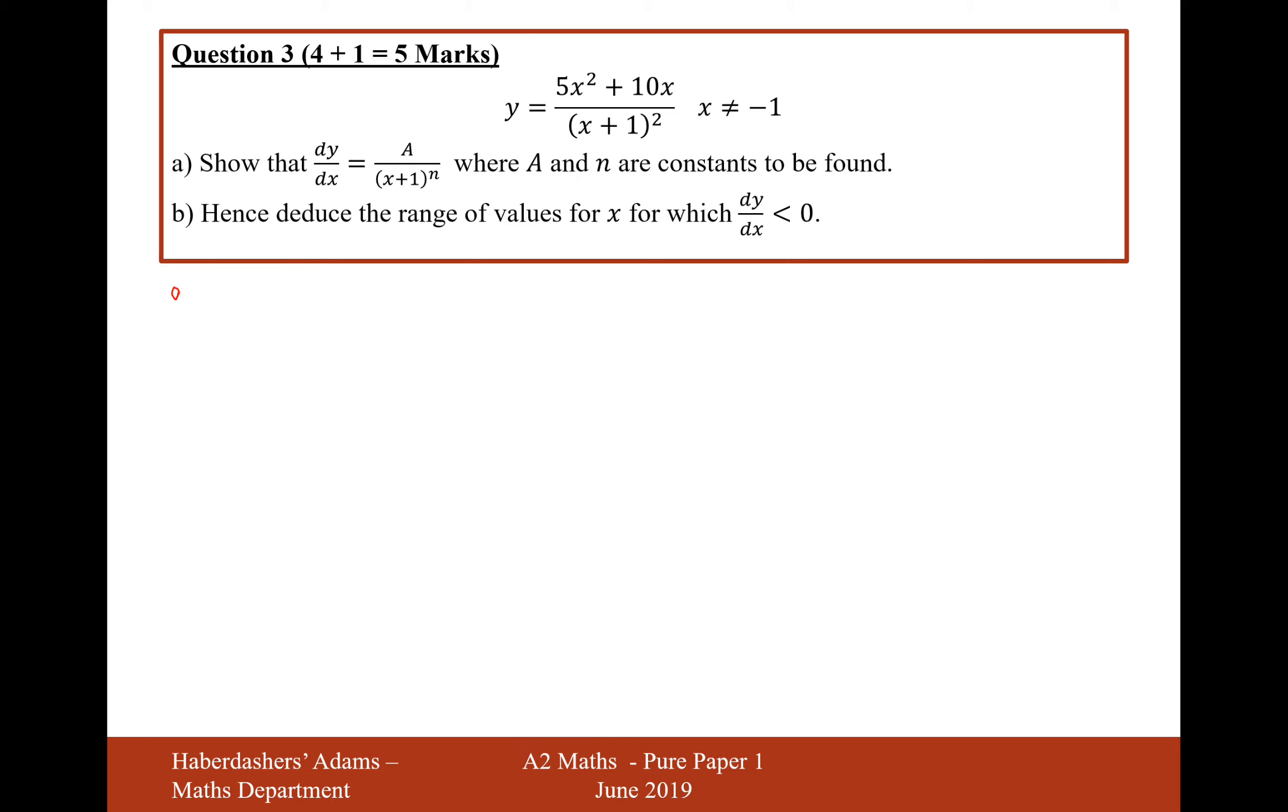Now in this question here we're going to be using the quotient rule. This says that if you're differentiating y equals u over v, then the differential dy by dx is going to be u dash v minus u v dash over v squared. When I write dash I mean du by dx and when I write v dash I mean dv by dx.